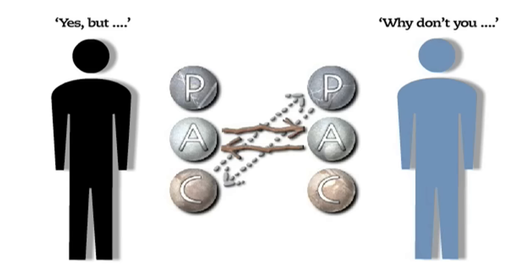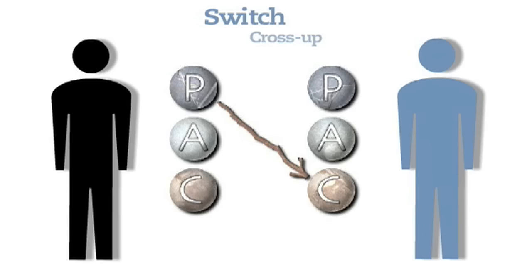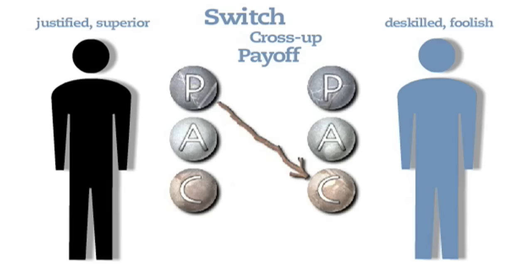A brings the game to an end, changing to a critical parent, with B changing to helpless child. This change of states at the end of a game is known as the switch. The switch is followed by what's known as the cross-up — a period of disorientation when the target of the game realises they've just been had. Now come the pay-offs, with the game's instigator feeling justified and superior, while B feels de-skilled and foolish.